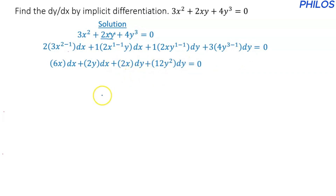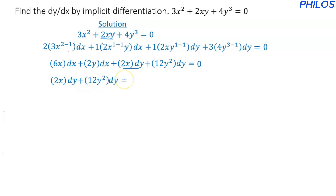At this stage we can group like terms. All the ones containing dy we keep on the left, and we send the ones with dx to the right. So we have 2x dy plus 12y squared dy on the left. On the right, 6x dx was positive so it becomes minus 6x dx, and 2y dx was positive so it becomes minus 2y dx.